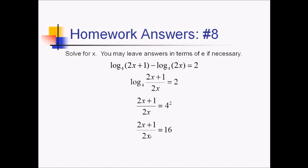So at this point, we're going to multiply both sides by 2x to get that out of the denominator. So we'll have 32x over on the right side. And then subtracting the 2x, that's 30x over on the right. Dividing both sides by 30, we get x equals 1 thirtieth.